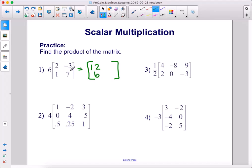For top right, we have negative 3 times 6, which is negative 18, and 7 times 6, which is 42. So there's our new matrix.